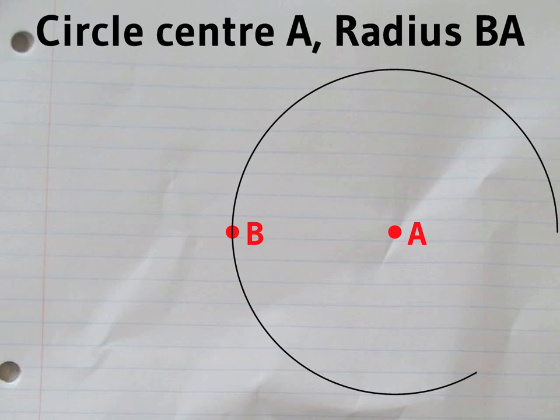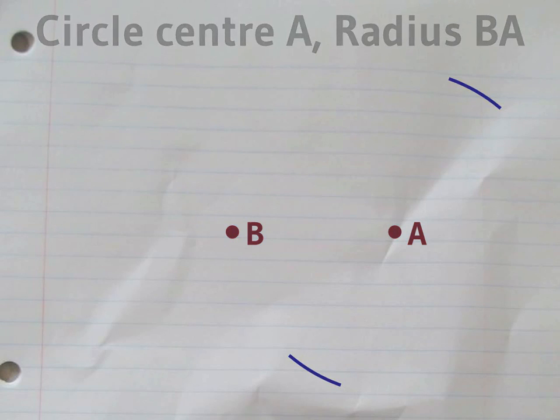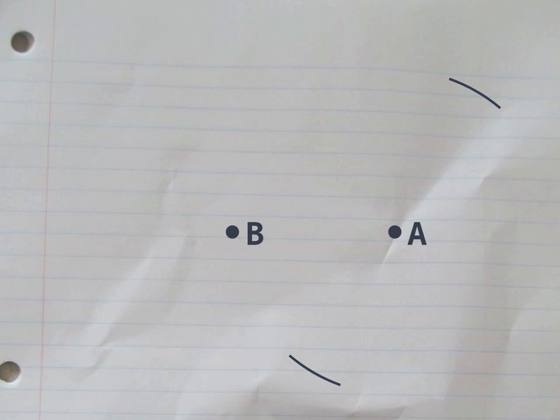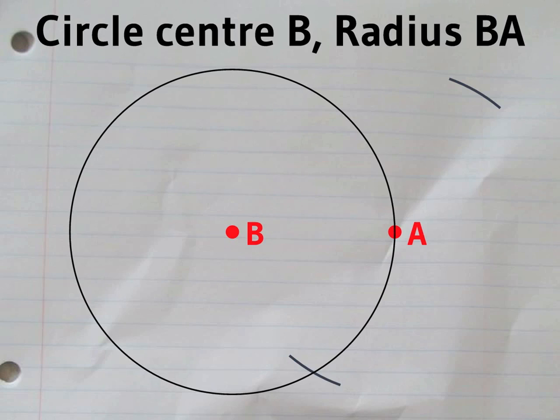Let's start with these two points. Draw a circle centered A with radius AB. Now draw another circle with the same radius, this time centered on B.